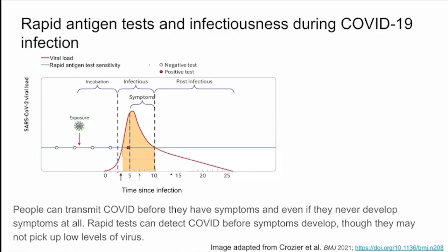A PCR test would catch a wider window. What a rapid antigen test is capable of doing is picking up basically a large section of the period where somebody is infectious — they're infectious from here until here. The antigen test is sensitive enough to pick up any time the viral load goes above a threshold, which means all the way from here until here. There's a section where you may not even have symptoms, but the antigen test is capable of identifying infection. It's a crucial period because that's where you would be unaware that you were potentially spreading.